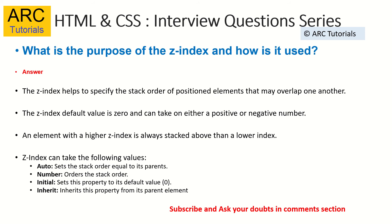Z-index will help you specify the order of positioned elements that may overlap one another. If I have an element I want overlapped on top of another, I can use Z-index. The default value is zero, and it can take either a positive or negative value. Can I give a value of 999? Yes. Can I give a value of minus 999? Yes. The default value is zero.